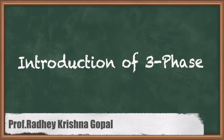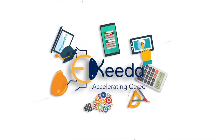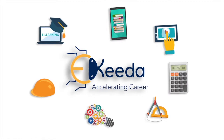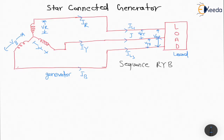Hello friends, now we are studying the star connected generator. Here is the given circuit of a star connected generator and here is the load. Vr, Vy, and Vb are the phase voltages of the generator.